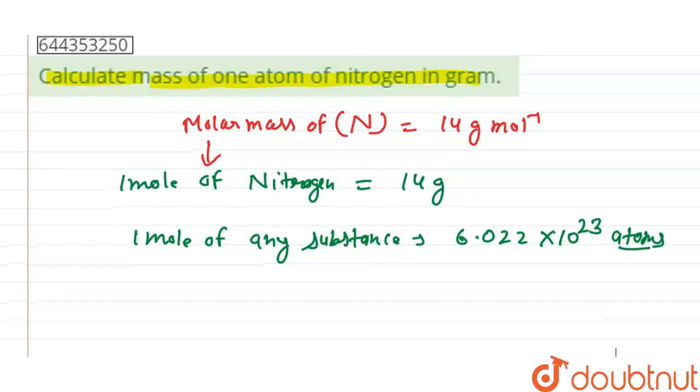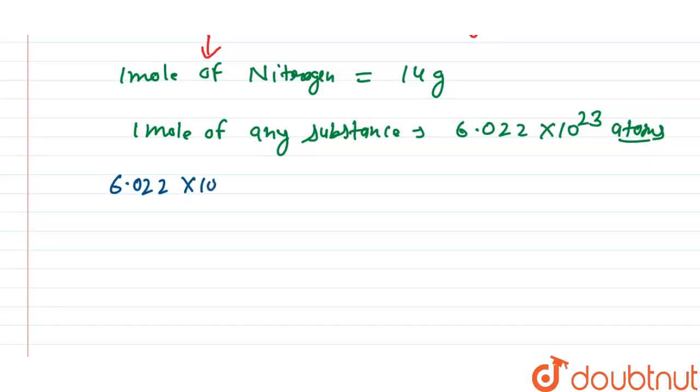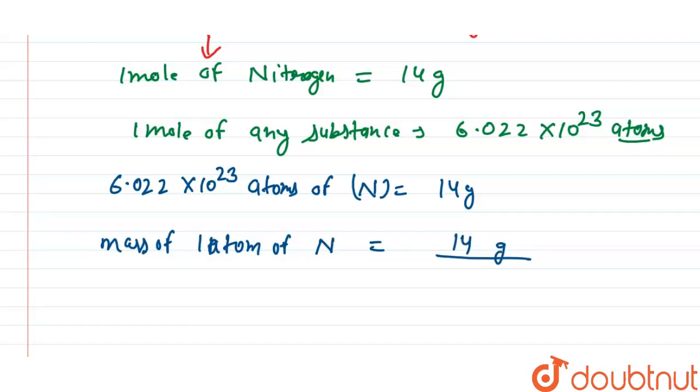We can say that 6.022 × 10^23 atoms of nitrogen have a mass of 14 grams. So, the mass of one atom of nitrogen will be 14 grams divided by 6.022 × 10^23.